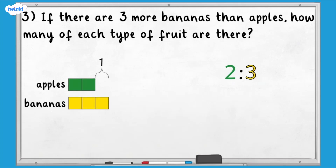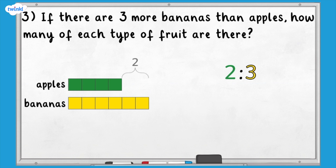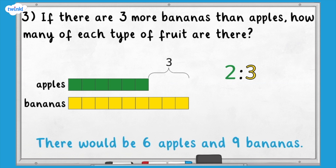Using the numbers in the original ratio, we can see that the difference between them is one, but we want the difference to be three. We can make the bars bigger, keeping the numbers of apples and bananas in proportion. We add two apples and three bananas — now we have four apples and six bananas, a difference of two. Adding another set gives us six apples and nine bananas, and now the difference is three.